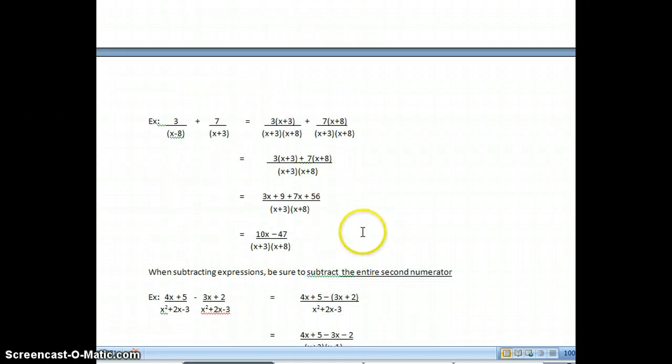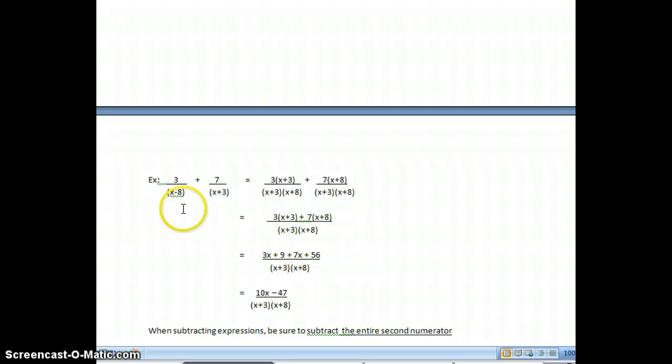Now let's go to one that has binomials. So I have 3 over x minus 8 plus 7 over x plus 3. I put them in parentheses, but they might not show up in parentheses. So I'm looking at these, and both of them are different, so what I'm going to have to do is just multiply them to get my common denominator. But I'm going to keep them in my separated form like this.